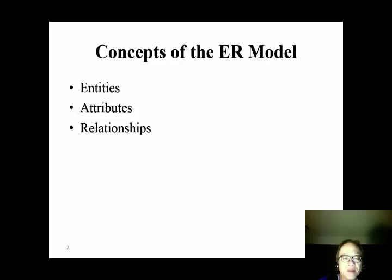In an entity relationship diagram, there are entities, attributes, and relationships. Entities are the real-world objects, such as customers and orders. Attributes are the properties of an entity, such as customer name and order date. We use relationships to link entities together.